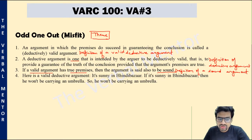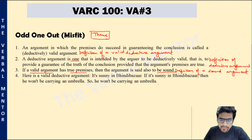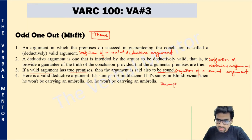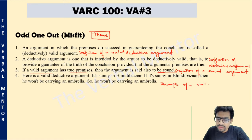Sentence four is an example of a valid deductive argument.